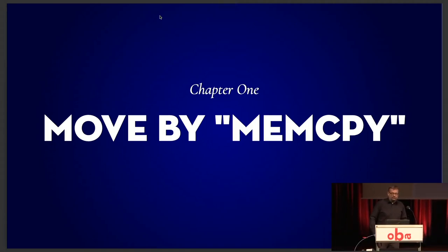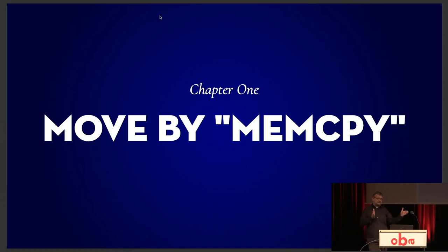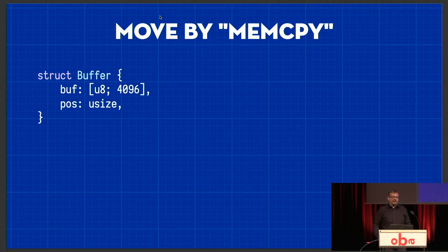We need to start by talking about move by what I call memcopy — that's not the official term, I made that up yesterday. This is the idea that the Rust compiler is allowed to move things around in memory as much as it wants to, and that all the types can be copied. That is, you can just take their bits and move them from here to there and they're still valid values. That's trivial for something like a usize — a 12 is a 12 no matter where it lives.